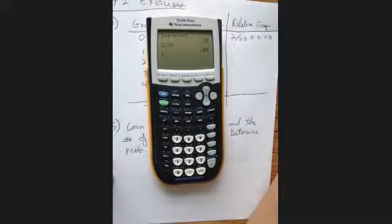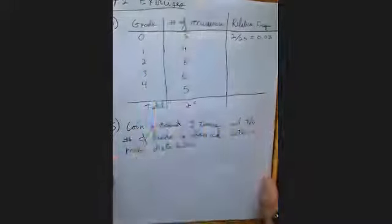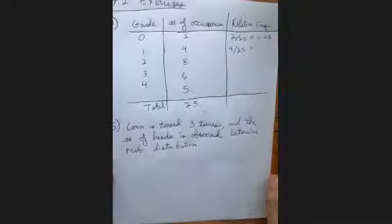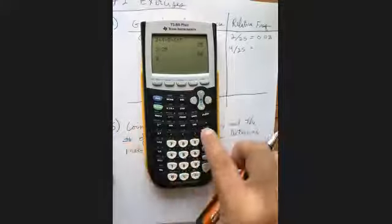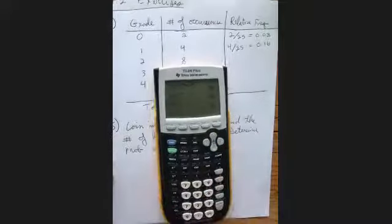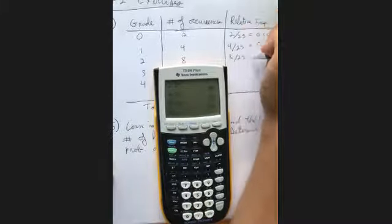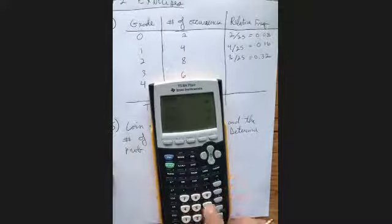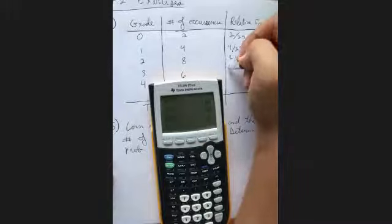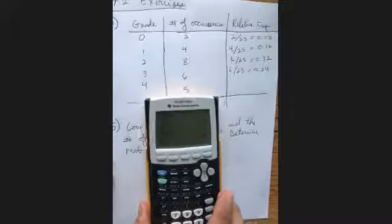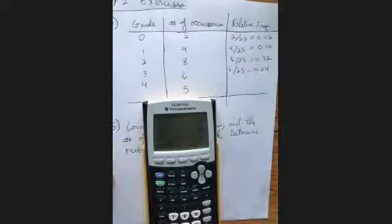That is your relative frequency for that particular datum. This is all you do all along the way — take the frequency and divide by the total. Four out of 25 is 0.16; 8 out of 25 is 0.32; 6 out of 25 is 0.24; and finally 5 out of 25 is 0.20.